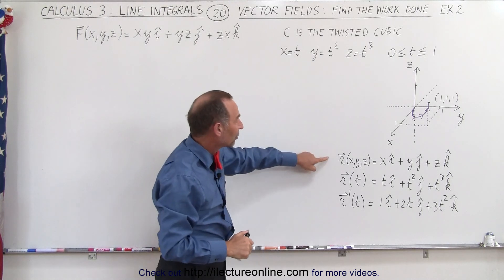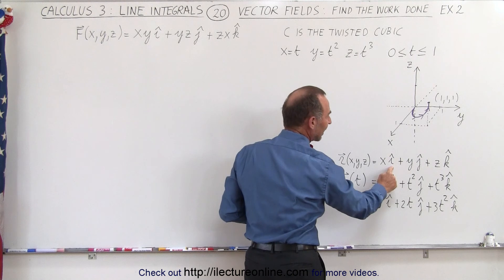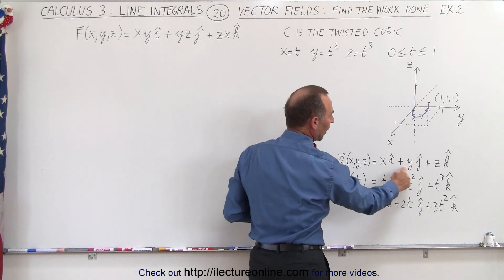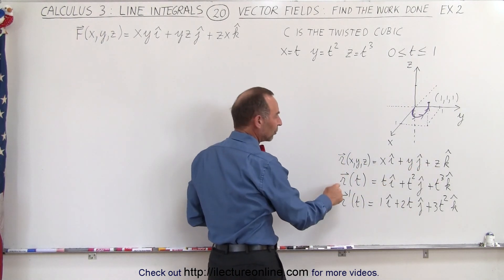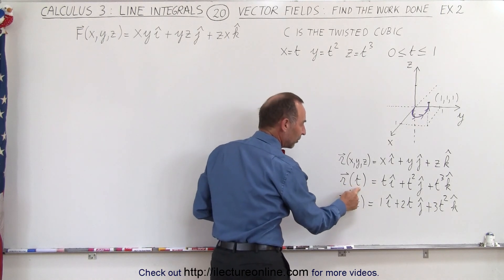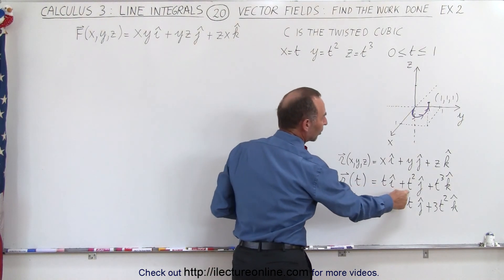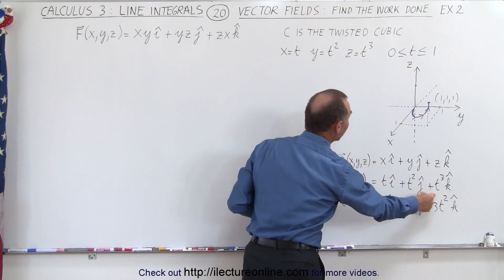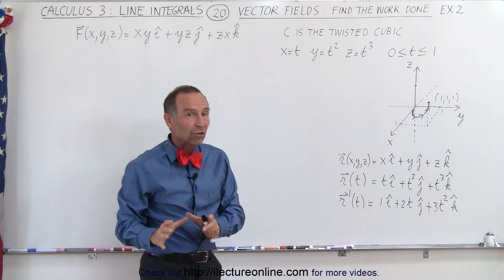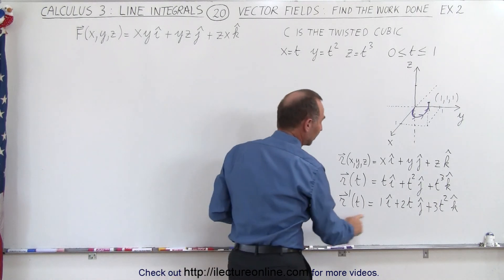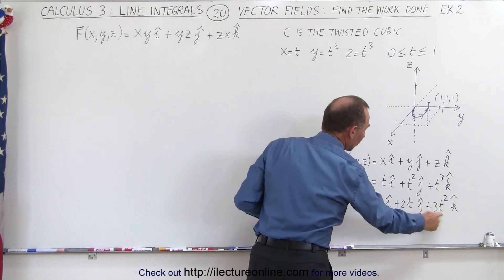The position vector in terms of x, y, and z is x in the i direction plus y in the j direction plus z in the k direction. If we define that with the parameterized variable t, it becomes t·i plus t squared·j plus t cubed·k. Taking the derivative of the position vector gives us i plus 2t·j plus 3t squared·k.